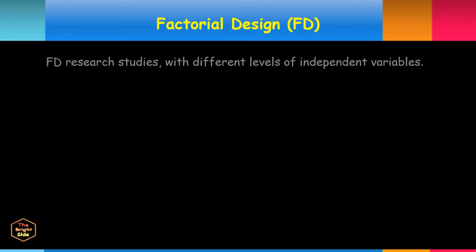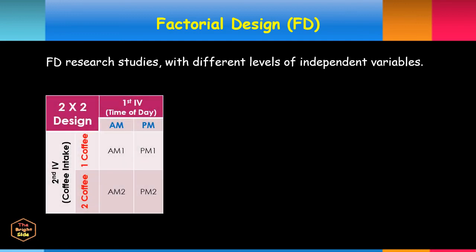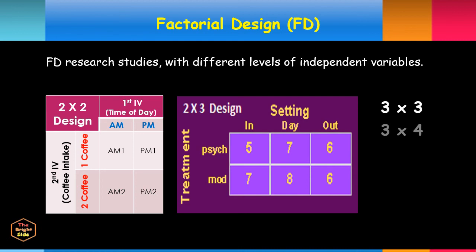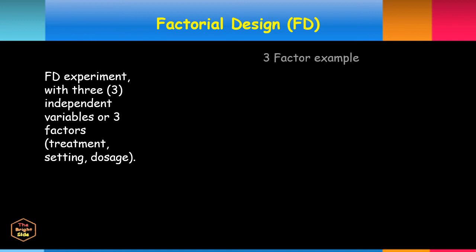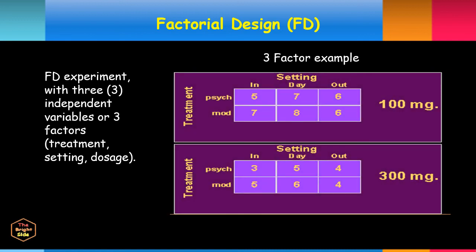Examples of factorial design research studies include two-by-two, two-by-three, three-by-four, four-by-five designs, and so on. In these designs, two or more factors or independent variables are being studied. Another example involves three independent variables — treatment, setting, and dosage — forming a two-by-two-by-three factorial design.